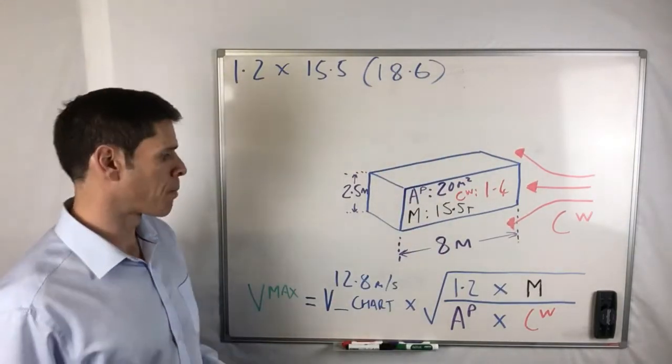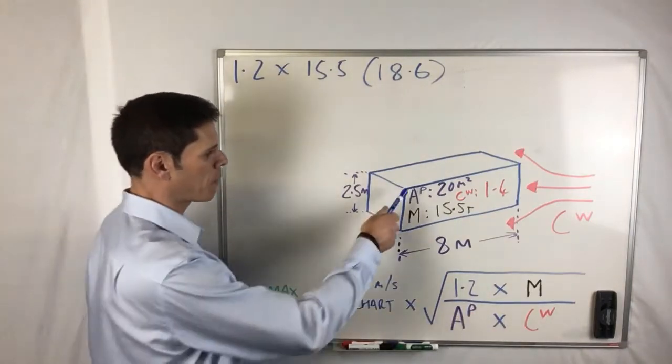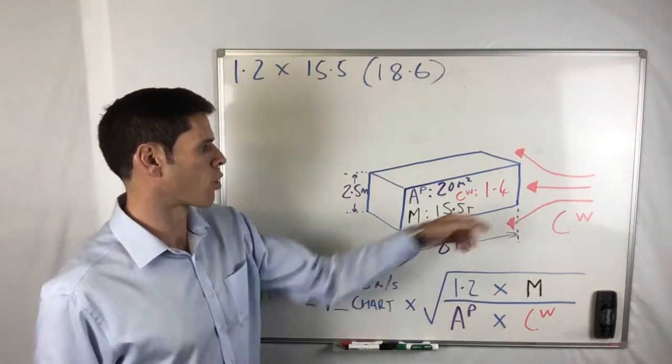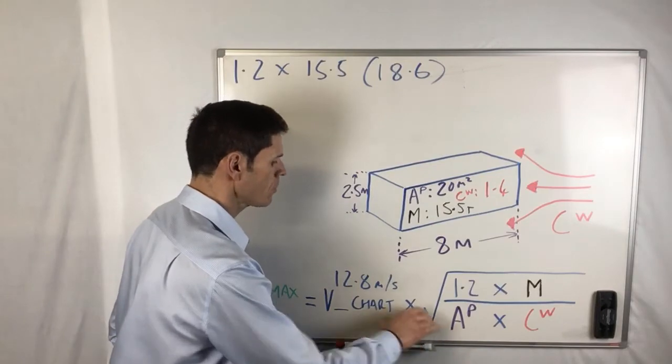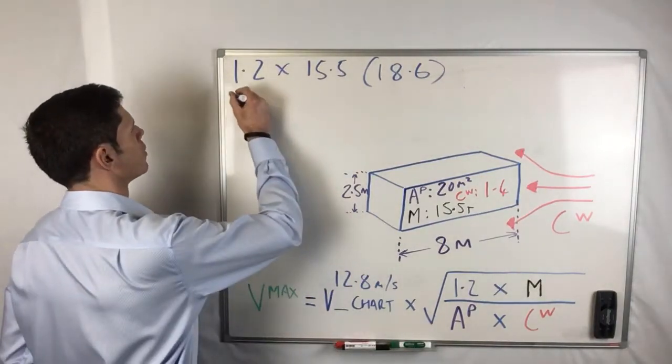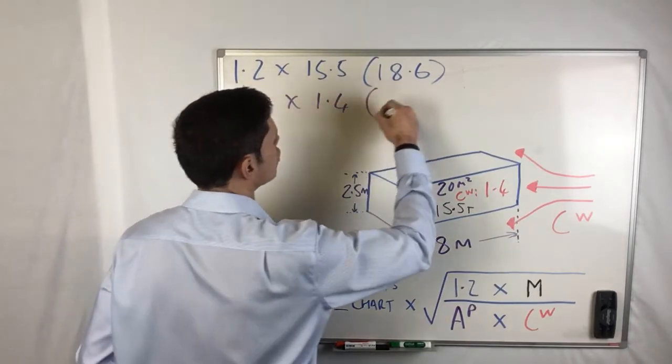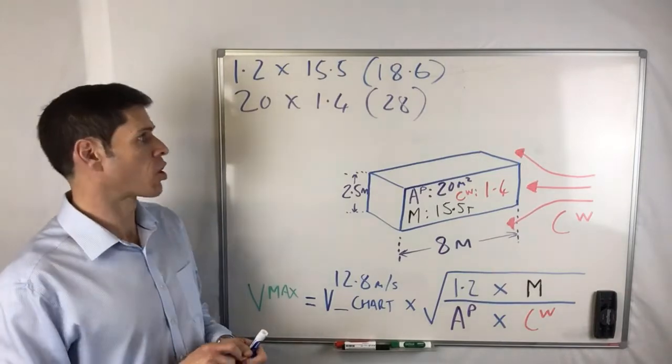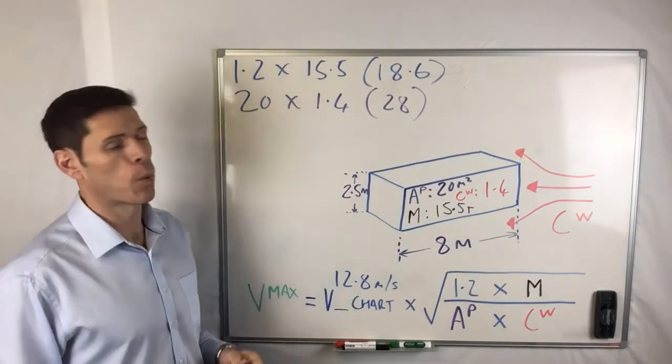And then the second part we'll take this, so AP times CW. Well AP in the case of this load is 20, our sail area is 20 square meters. We're going to multiply that by 1.4. So we have 20 times 1.4, which of course gives us 28.